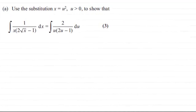Hi there, for this question we're asked to use the substitution x equals u squared, where u is greater than 0, to show that the integral of 1 divided by x times 2 root x minus 1 with respect to x equals the integral of 2 over u times 2u minus 1 with respect to u. This is worth three marks.